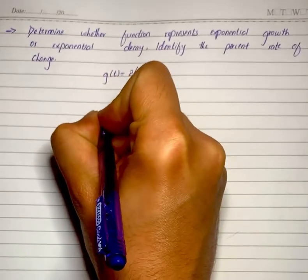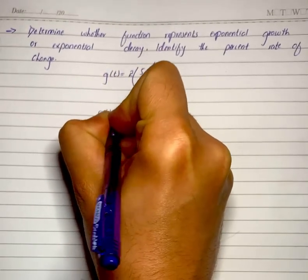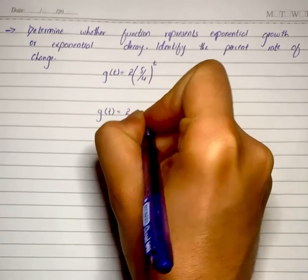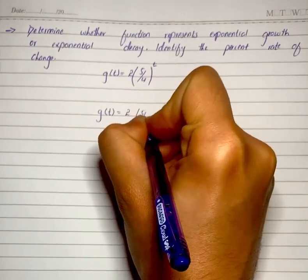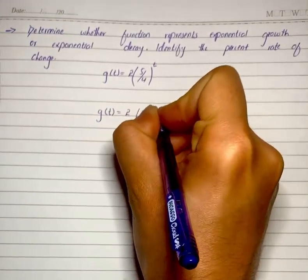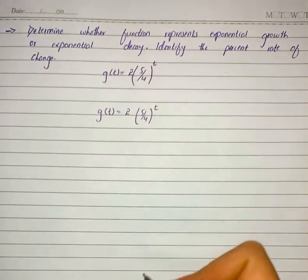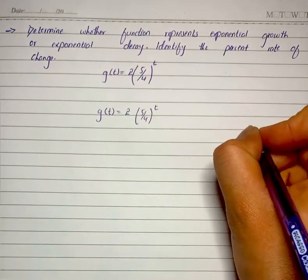It is g(t) = 2 × (5/4)^t. Now we know the function is in the form of y = a(1+r)^t.